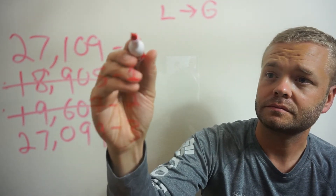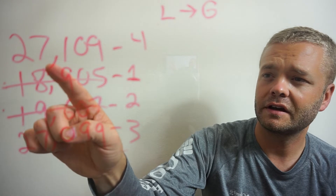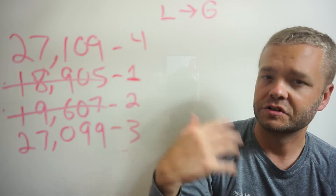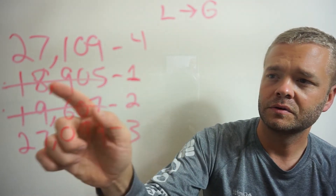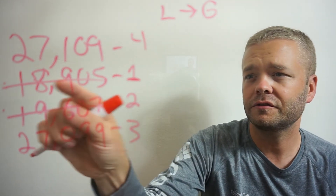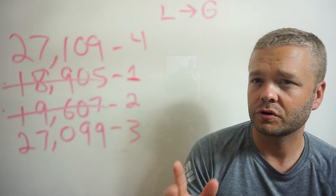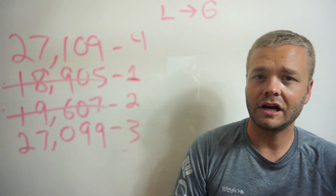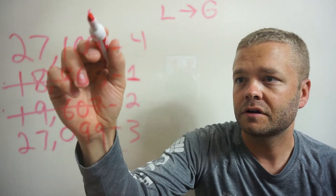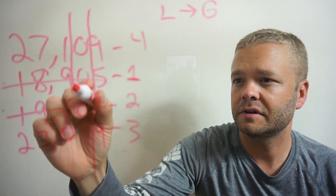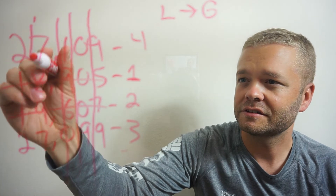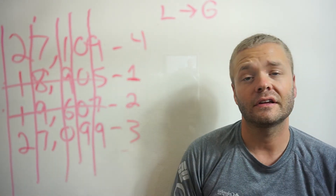And that's true because 27,109 is bigger than 27,099, which is bigger than 19,607, which is bigger than 18,905. So now they're in order. If I had to rewrite them, I'd write them from least to greatest. They have to be on top of each other according to place value — ones on ones, tens on tens, hundreds on hundreds, commas lined up, thousands on thousands, and ten thousands on ten thousands.